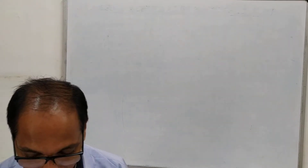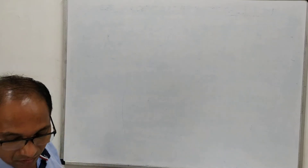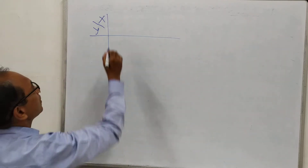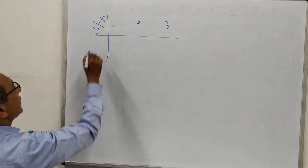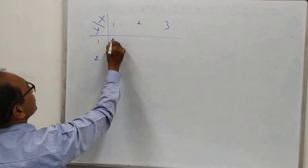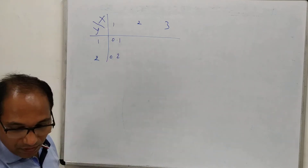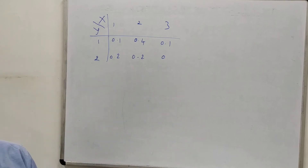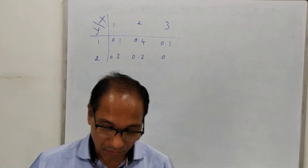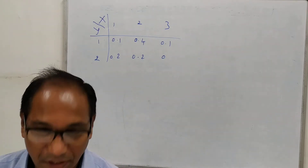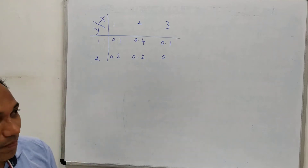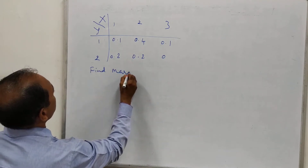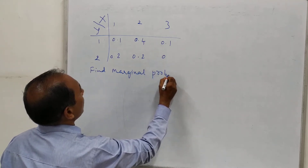So students, we were looking at the example of the given table X-Y where X has the values 1, 2, and 3, and Y has the values 1 and 2. The respective joint probabilities were given as 0.1, 0.2, 0.4, 0.2, 0.1, and 0. We have seen how to find the probability of X plus Y greater than 2 and probability of X plus Y less than 4. Now let us see how to find the marginal probability of X.